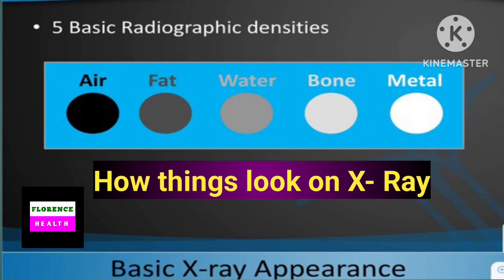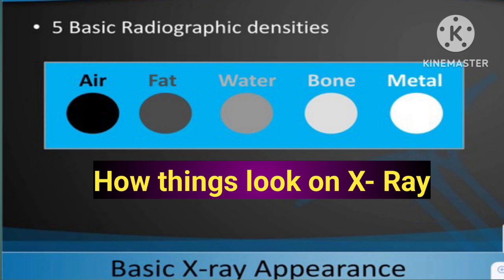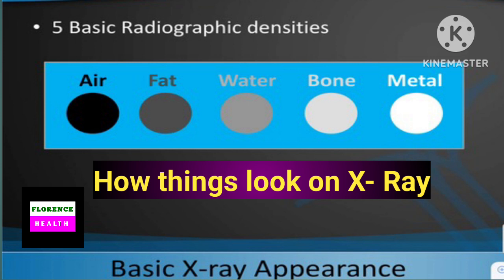How things look on X-ray: air appears black, fat dark gray, soft tissue gray, bone and calcium white, and metal purely white.